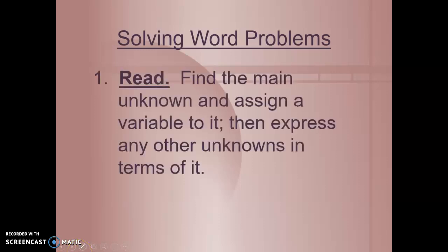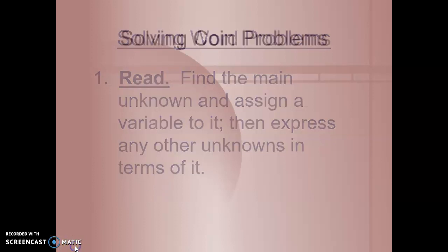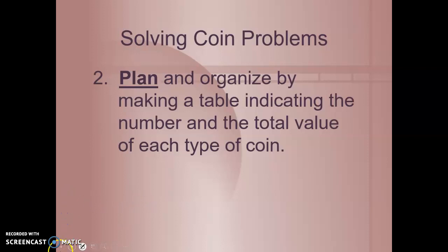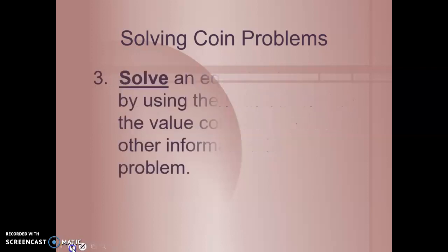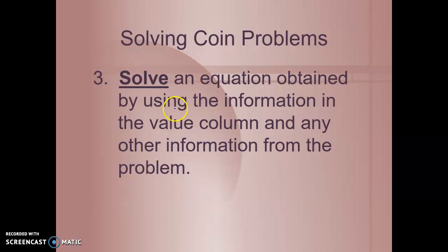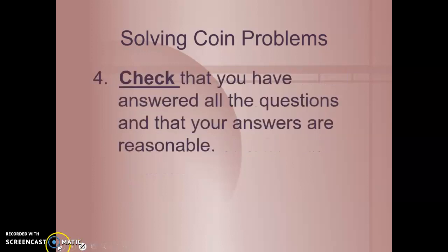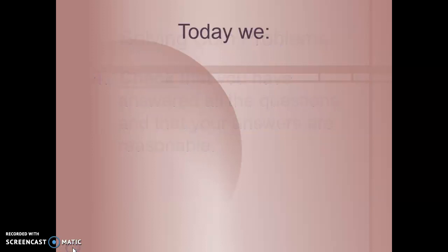When solving word problems, first read the problem. Find the main unknown and assign the variable to it. Then express any other unknowns in terms of it. So our main unknown was quarters, and we expressed everything else using our variable for quarters. Then plan and organize by making a table, indicating the number and total value of each type of coin. Solve an equation using the information in the value column, and that's where we use that $2.45. Check that you have answered all the questions and that your answers are reasonable. If you get 27 quarters, you know that's a lot more than $2.45, so that must not be a reasonable answer.